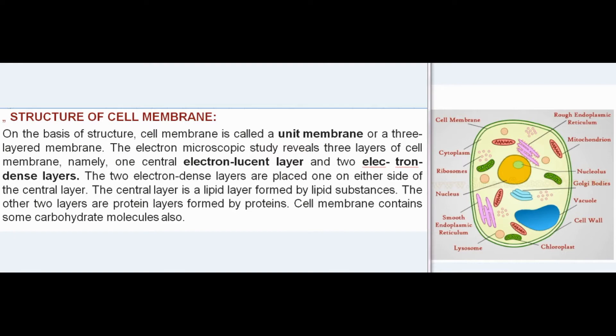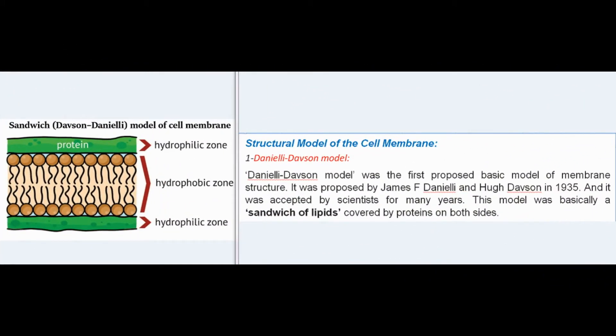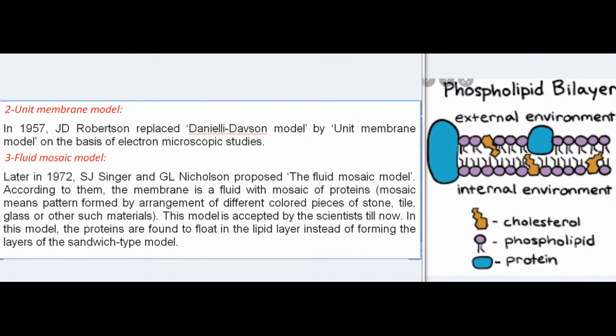The Danielli-Davson model was the first proposed basic model of membrane structure, proposed by James F. Danielli and Hugh Davson in 1935, and accepted by scientists for many years. This model was basically a sandwich of lipids covered by proteins on both sides. In 1957, J.T. Robertson replaced the Danielli-Davson model with the unit membrane model, based on electron microscopic studies.